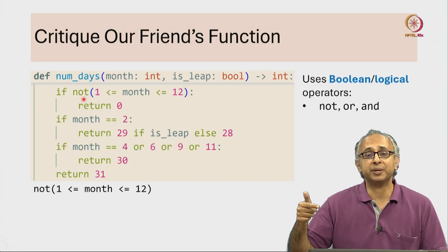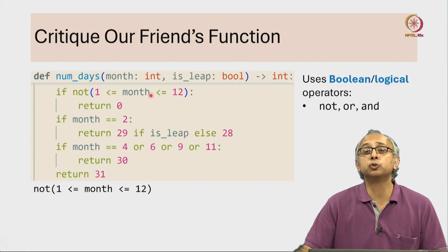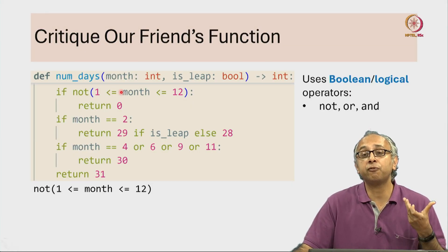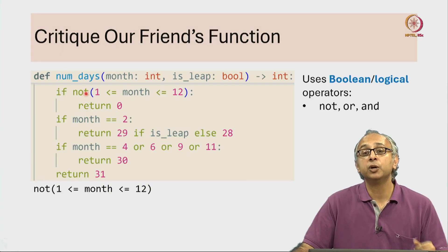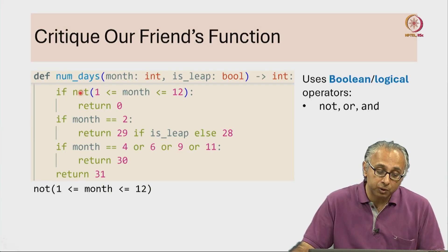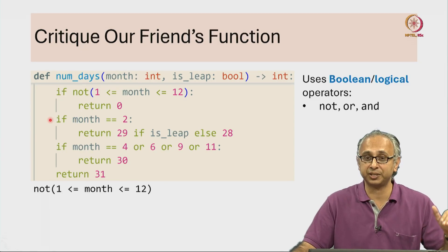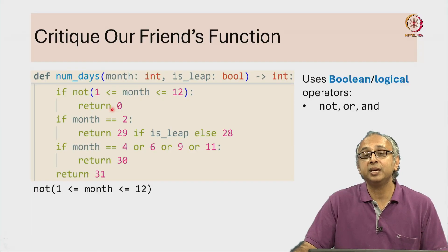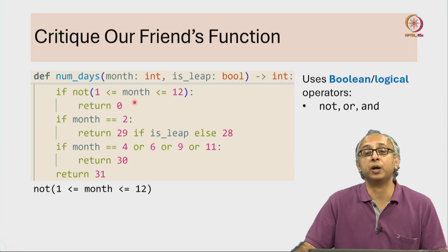And whatever answer we get, true or false, not will flip it. So if this condition evaluated to true meaning it was a legal month, then not of this condition will be the object false. And then we would be saying if false, which means for legal months we will not go into this if condition. We will come here and process them.